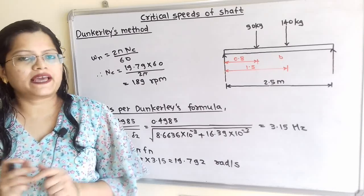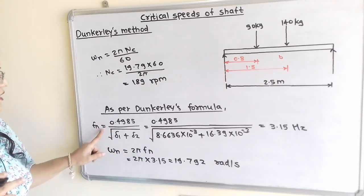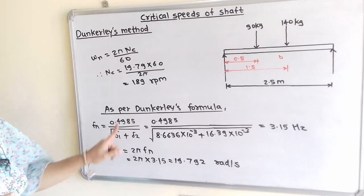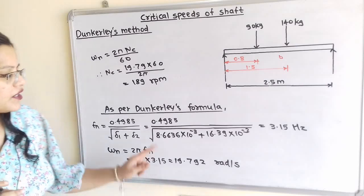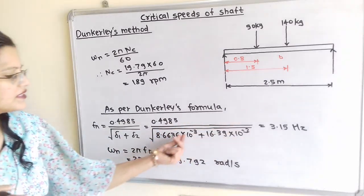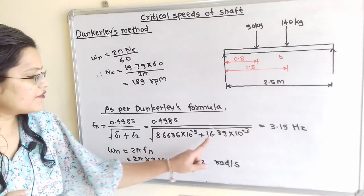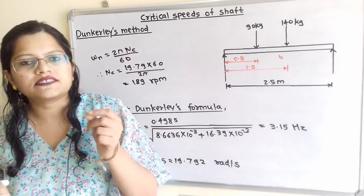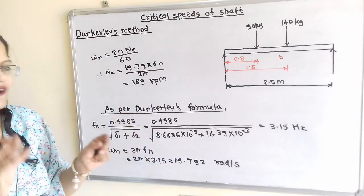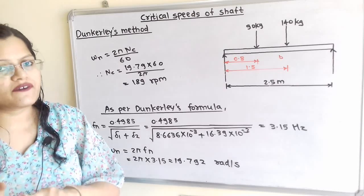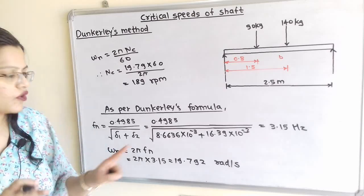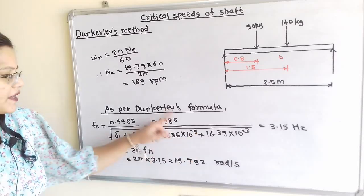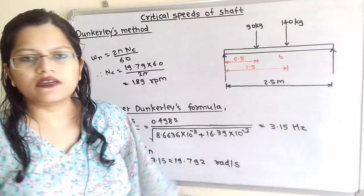Now we will apply the Dunkerley's formula. So Fn is equal to 0.4985 divided by under root of delta 1 plus delta 2. Now we have to first solve this denominator. So this 10 raised to minus 3 is the common term and if we add this 16.39 plus 8.66 then it is approximately equal to 25 point something. So we have to find out the value of denominator under root of 25 multiplied by 10 raised to minus 3. And when we solve this we will get the answer 3.15 hertz.